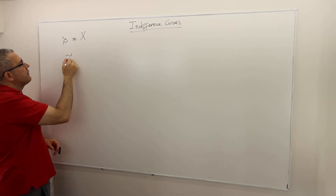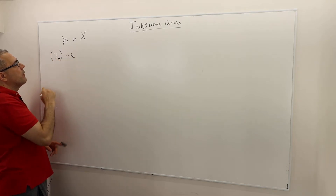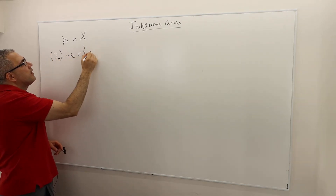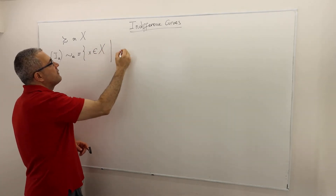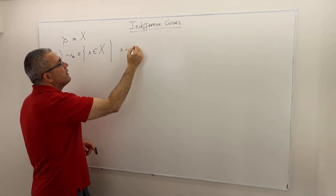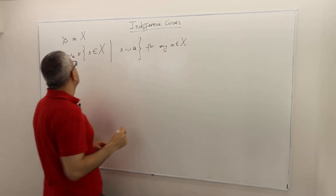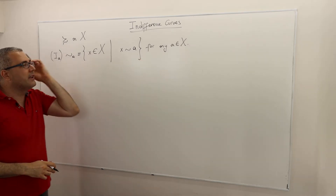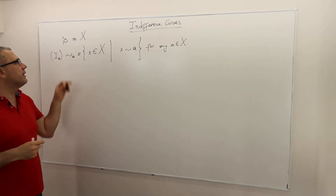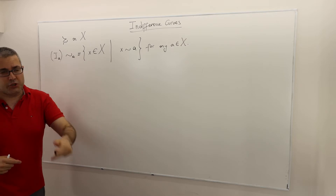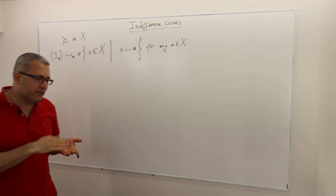So this is how we define indifference curves. We denote it this way, sometimes I sub a — either notation is fine. This is a set which basically contains alternatives x such that the alternative x is indifferent to alternative a, for any a in X. This set is defined for a, so for any alternative a we define its indifference curve.